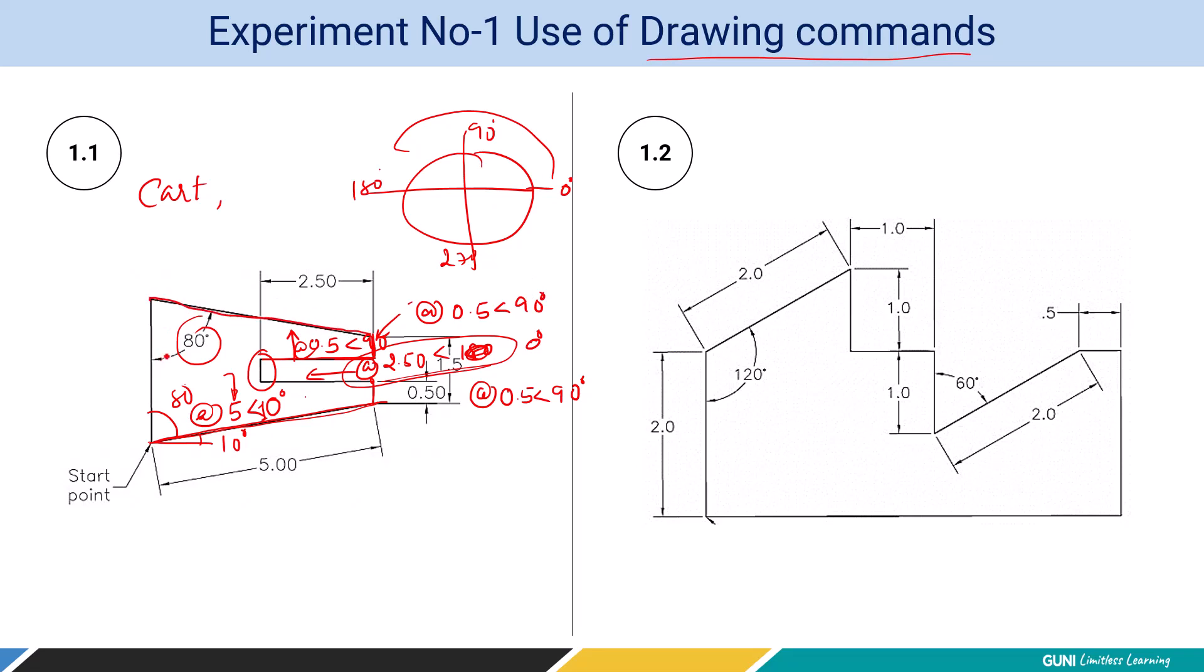This 80 degree is also over here. So the total angle from the horizontal line is 90 plus 80, that is 170. So for this line, I am going to type at the rate 5 less than 170 degree and enter.